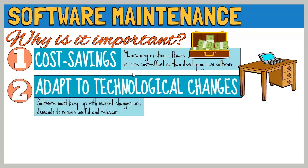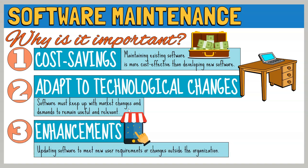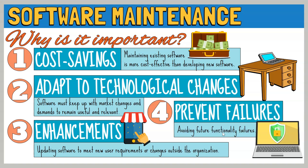Second, adapting to technological changes. As technology evolves rapidly, software must keep up with the market changes and demands to remain useful and relevant. Third, enhancements — updating software to meet new user requirements or changes outside the organization. And fourth, preventing failures — reducing or avoiding future system functionality failures. Proper monitoring and maintenance are essential to achieving these goals.